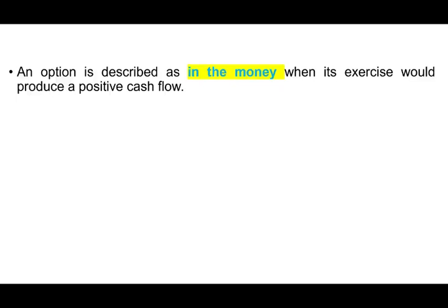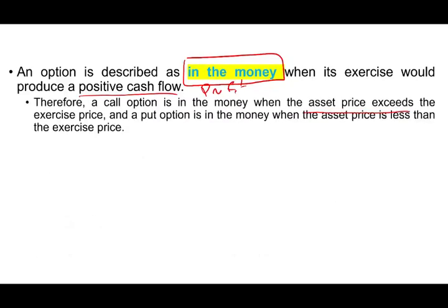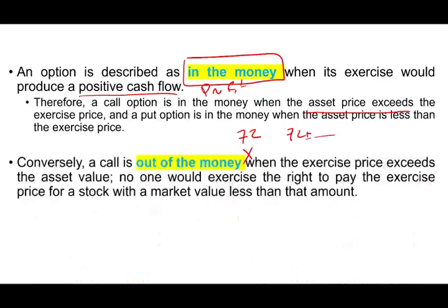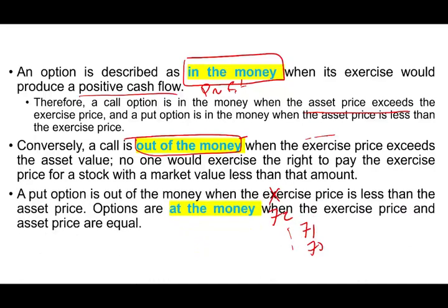Let's talk about option terminology. When we say an option is 'in the money,' it means that if you exercise it, you would have a positive cash flow — a profit. A call option is in the money when the asset price exceeds the exercise price. So if x equals $72, the call is in the money any time the price is above $72. A call option is 'out of the money' when the current price is below $72 — exercising it would not be profitable. The option is 'at the money' when the exercise price equals the market price of the asset.